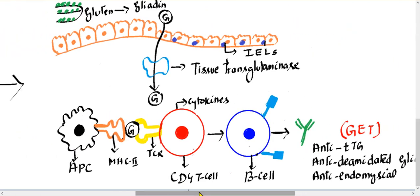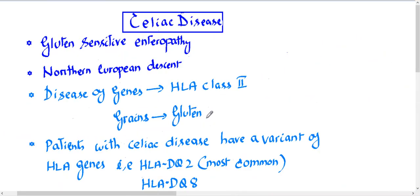Hello everyone, I hope you all are doing great. Today I am here to discuss a high yield topic: celiac disease. I have made three slides. In the first slide, we will talk about celiac disease and how gluten damages the intestine. In the second slide, I have talked about the clinical features and the risk factors. And the last slide covers diagnosis, treatment, and also what is the D-xylose test and its importance in celiac disease. So let's jump to the topic.